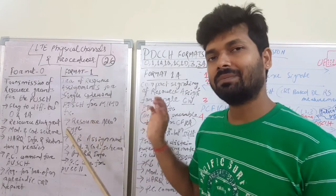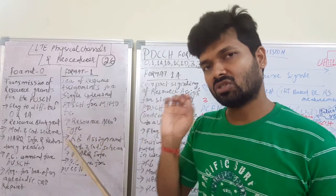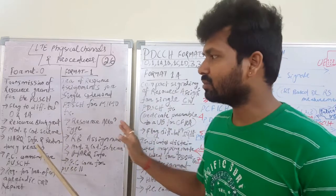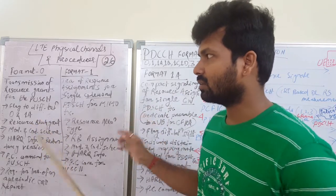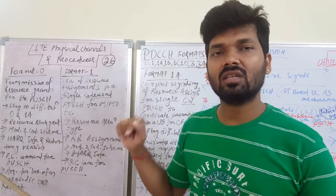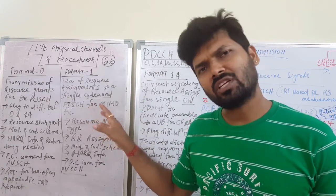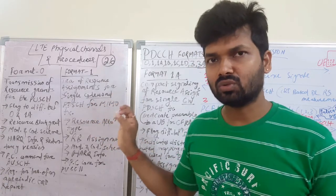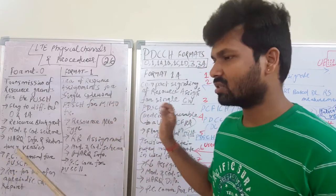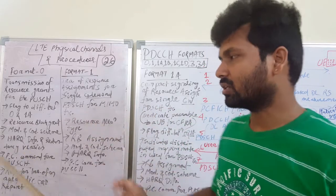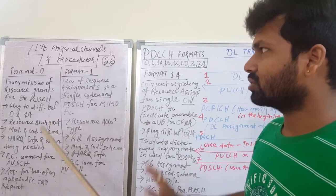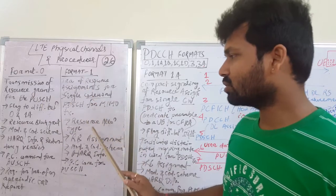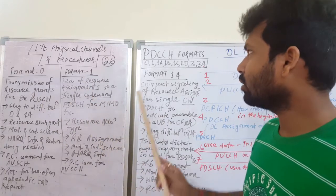The basic difference between Format 0 and Format 1: Format 0 is for PUSCH transmission while Format 1 is for PDSCH and is used for MIMO. Also, Format 0 sends the power control command for PUSCH whereas Format 1 sends the power control command for PUCCH. Format 1 handles resource allocation for the PDSCH single codeword transmission, while Format 0 carries the PUSCH transmission details and resources.